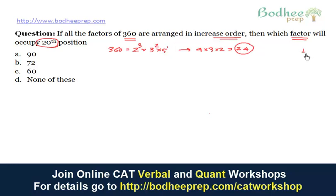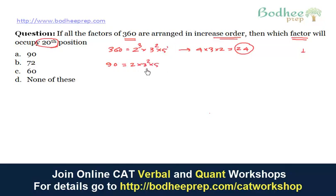And 1 is the factor of all numbers, so 1 will be at the first position. To illustrate the method of solving this question, let me take a smaller number — 90. So 90 can be factorized as 2 × 3² × 5, and the number of factors will be 2 × 3 × 2 = 12.